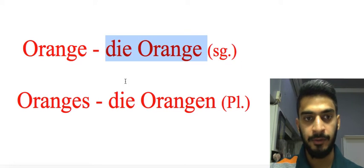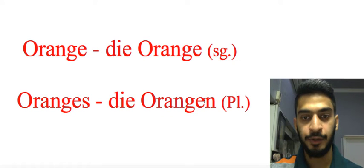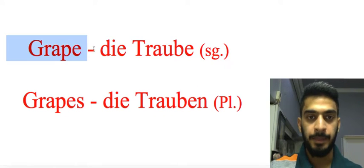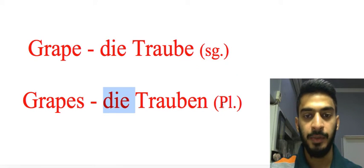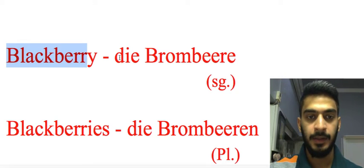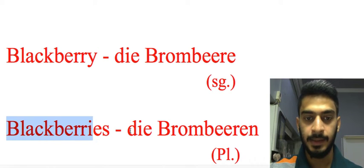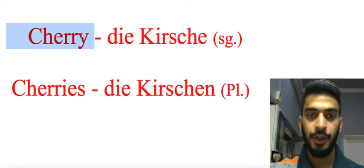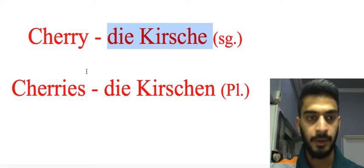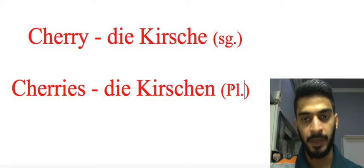Orange — 'die Orange' singular form, oranges — 'die Orangen' plural form — extra 'n' at the last. Grape — 'die Traube' singular form, grapes — 'die Trauben' plural form — extra 'n' at the last. Blackberry — 'die Brombeere', blackberries — 'die Brombeeren' — again extra 'n' at the last. Cherry — 'die Kirsche' singular form, cherries — 'die Kirschen' plural form — extra 'n' at the last position.